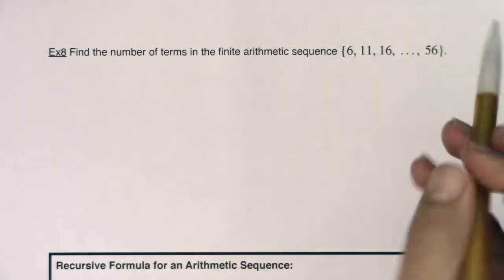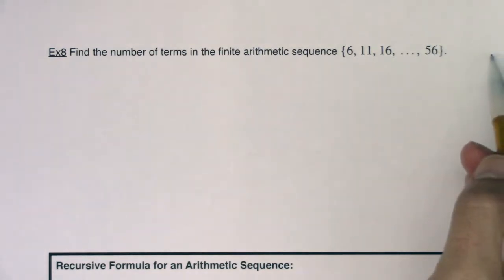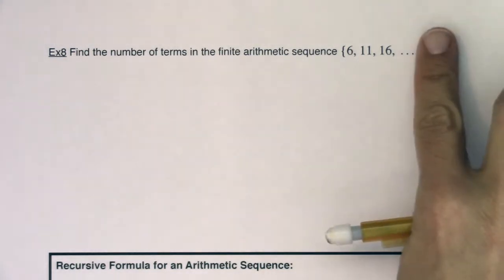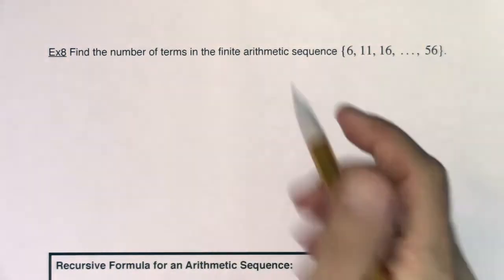Now it says finite here because it's going to stop at whatever term this is. It's not going to go past 56. When you see something without an endpoint you might hear that referred to as an infinite sequence, and this one is a finite arithmetic sequence.